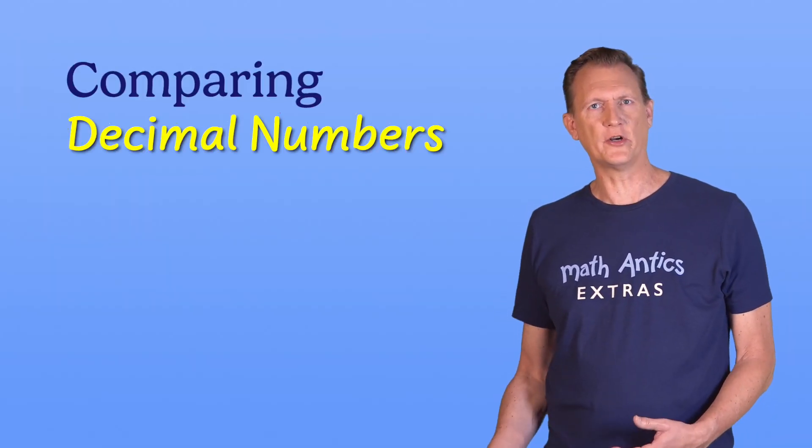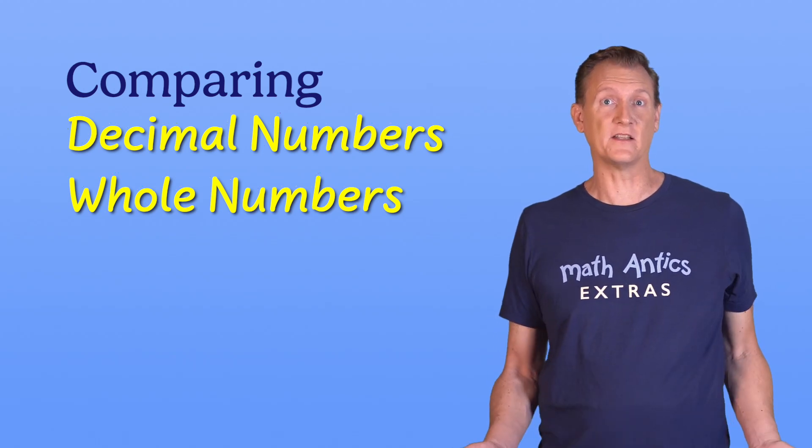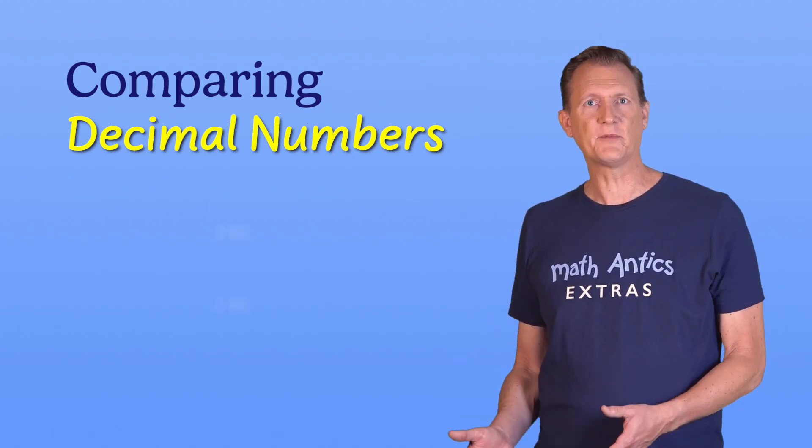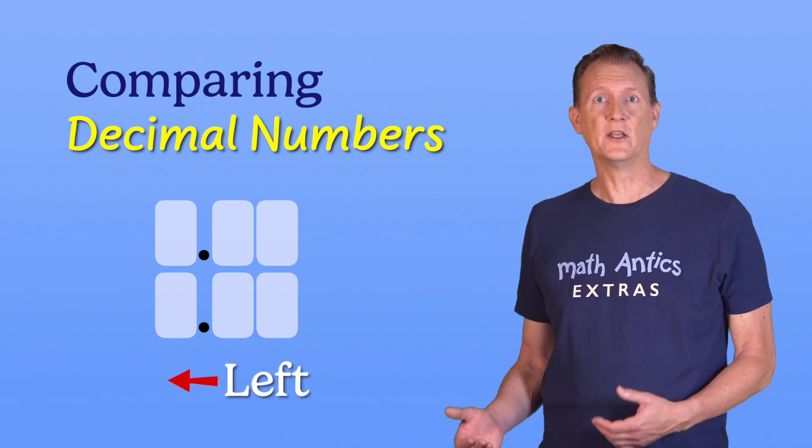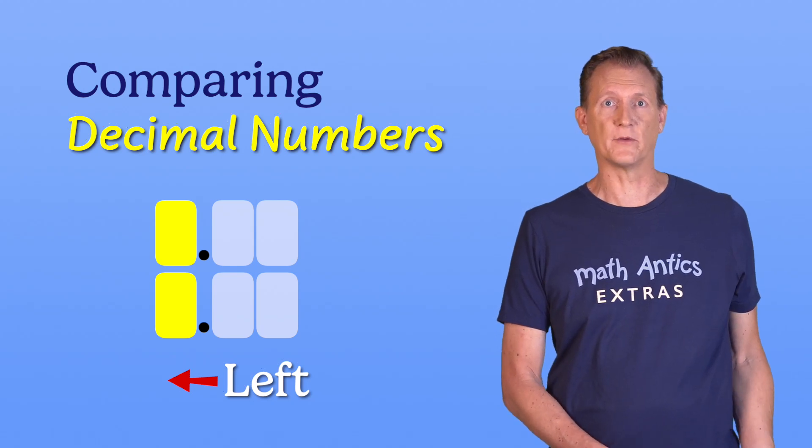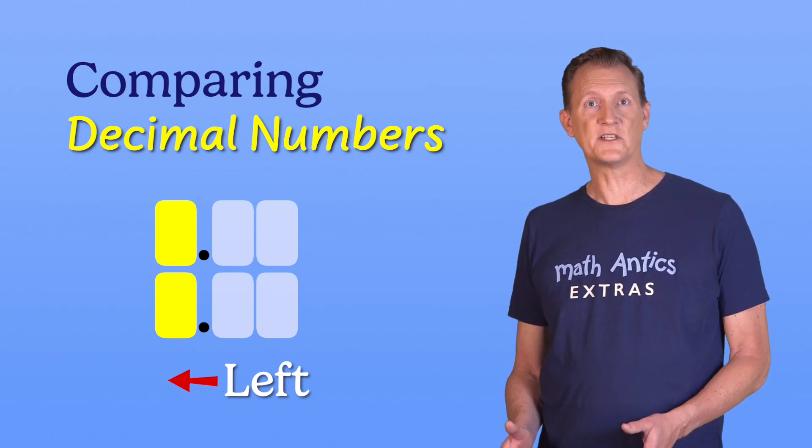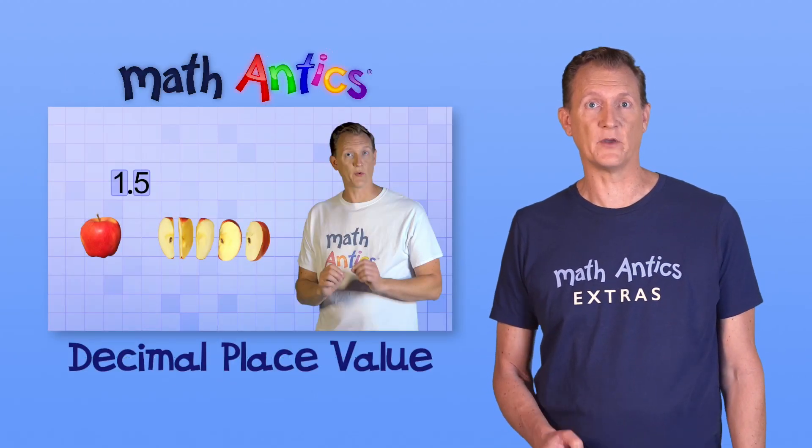Is comparing decimal numbers harder than comparing multi-digit whole numbers? Nope, in fact it's basically the same process. You line up the number places, and then, starting with the biggest number place to the left, you look for digits that you can compare to tell you which number has the greatest value. But it will help if you really understand how decimal places work, so be sure to watch our lesson about decimal place value if you haven't already.